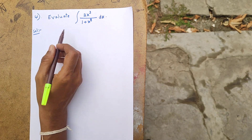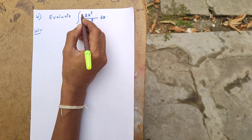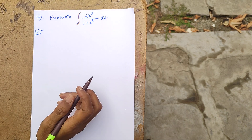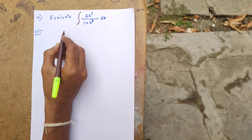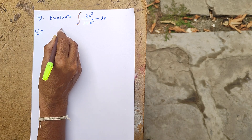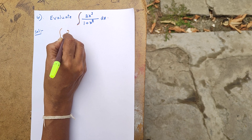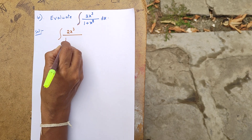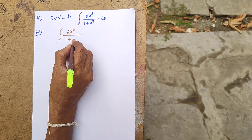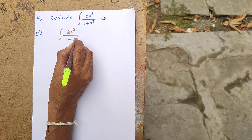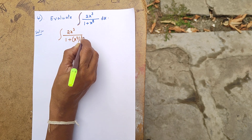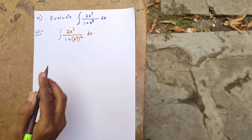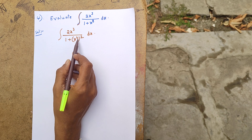This is a 2-mark question. We need to evaluate the integral of 2x³ divided by (1 plus x to the power 4) squared dx.